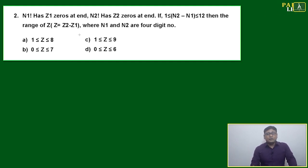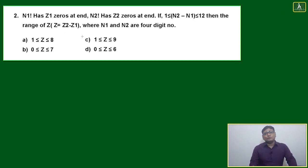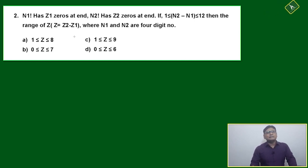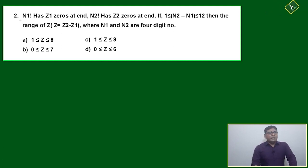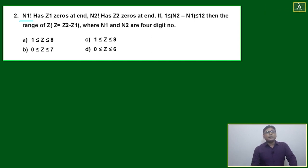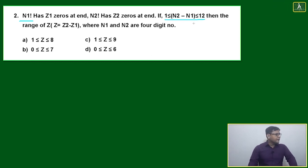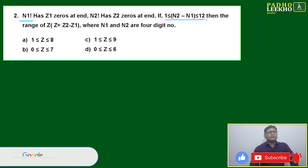For CAT preparation, solving this type of question is much needed — it is a learning exercise that will give you a lot of understanding. The problem: n1! has z1 zeros at the end, n2! has z2 zeros at the end. If n2 minus n1 is between 1 and 12 — meaning minimum 1 and maximum 12 — what is the range of z2 minus z1?